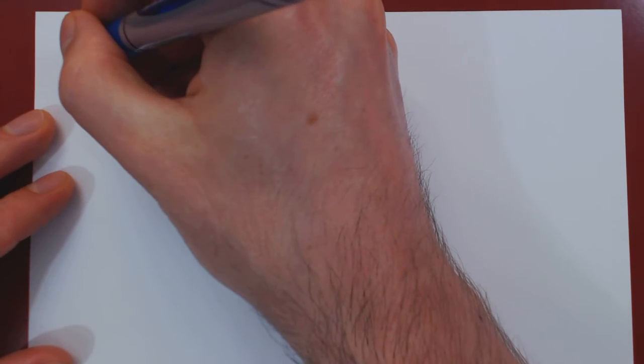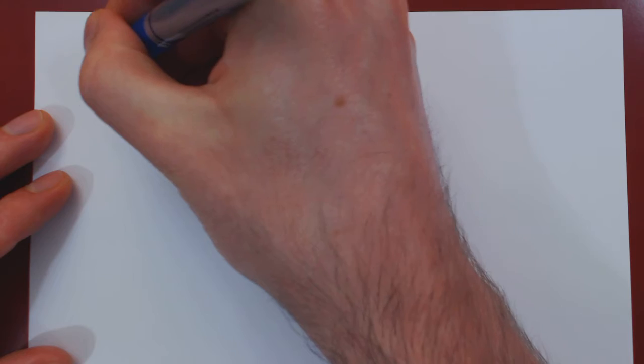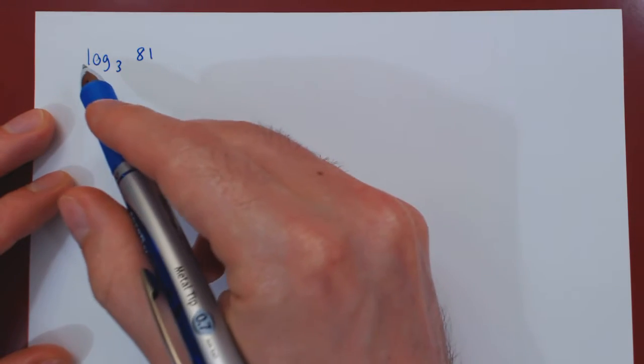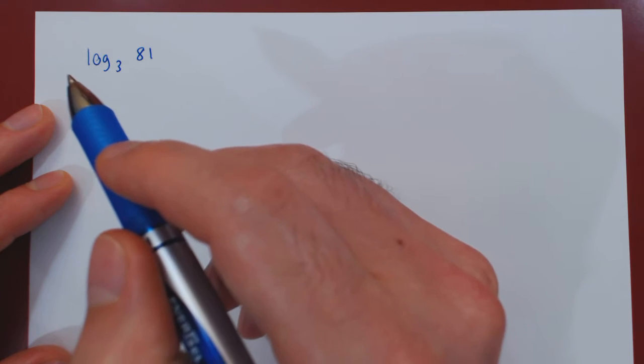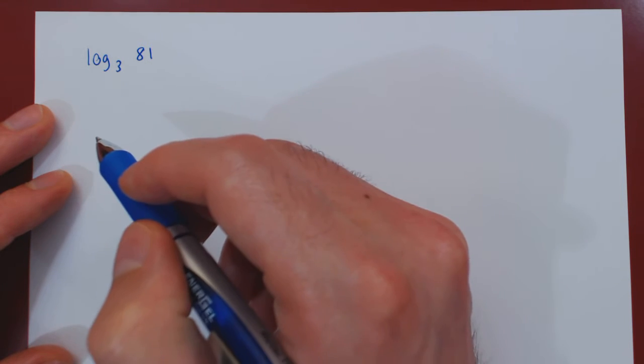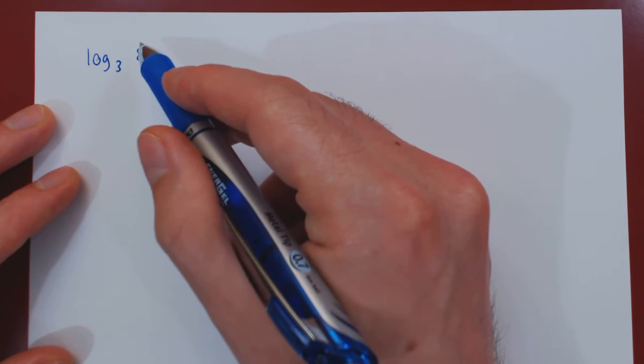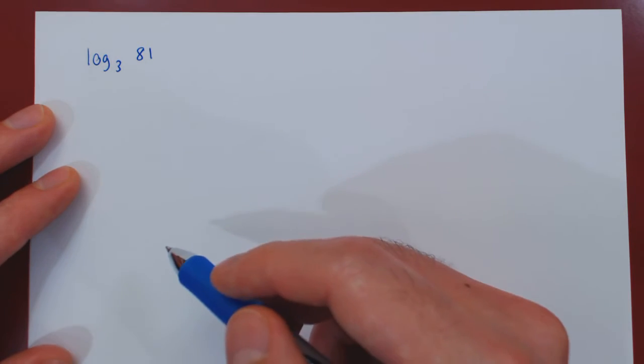So what if we look at the logarithm base 3 of 81? The logarithm base 3 function is the inverse function of the exponential function base 3. So the question is, could we perhaps write 81 as a power of 3?